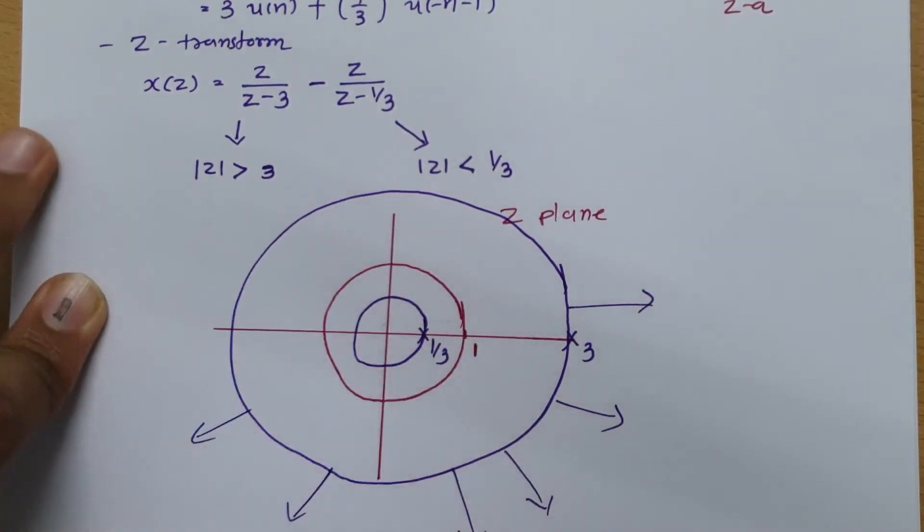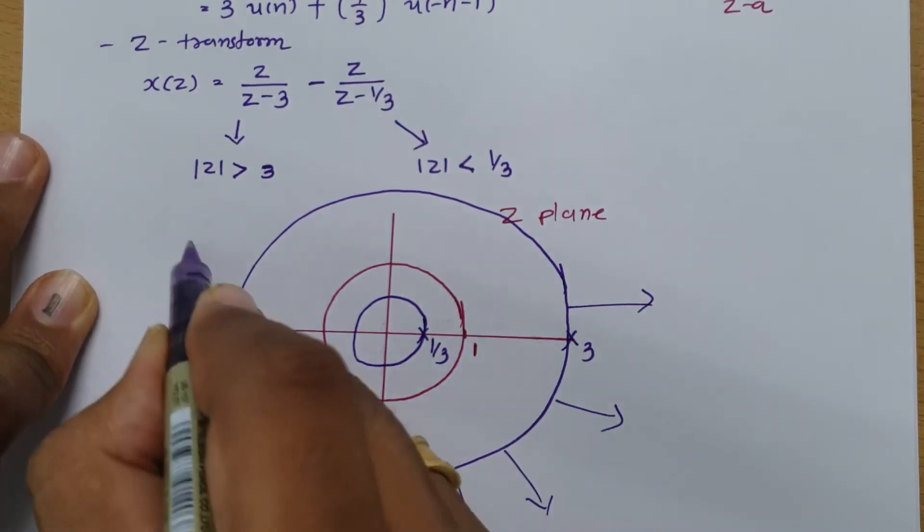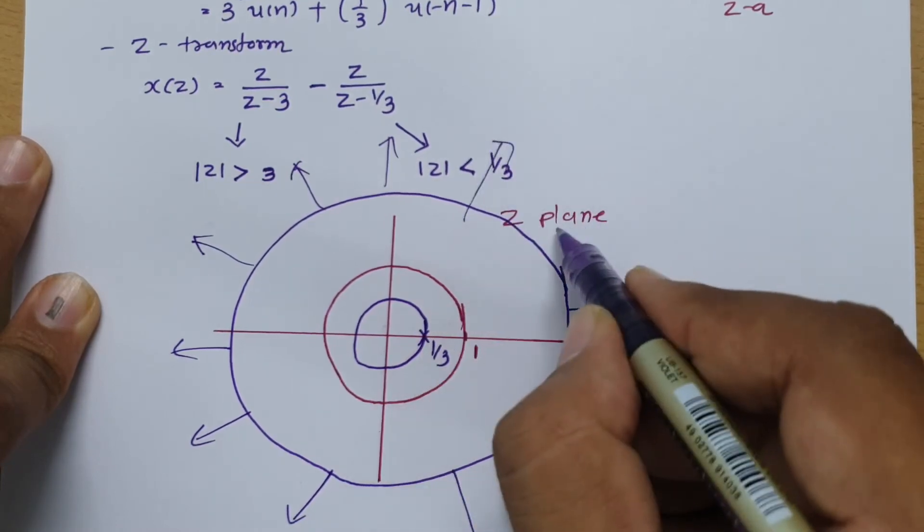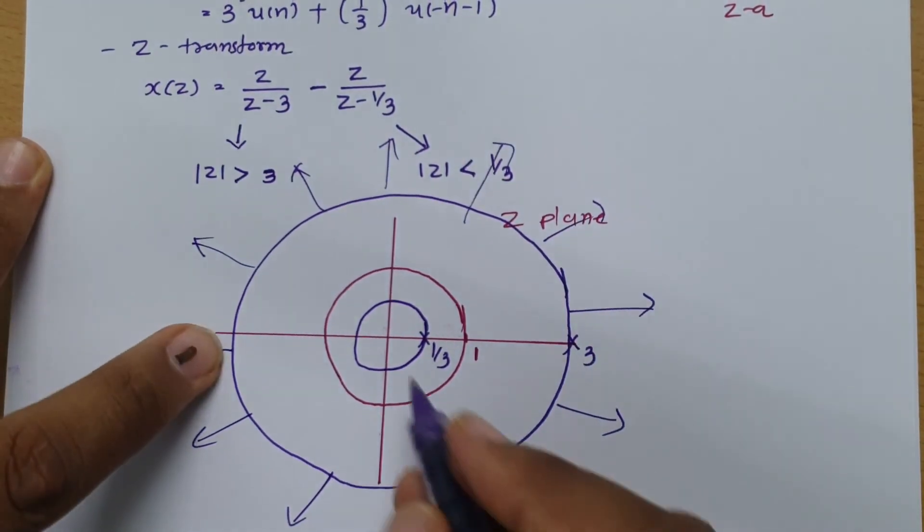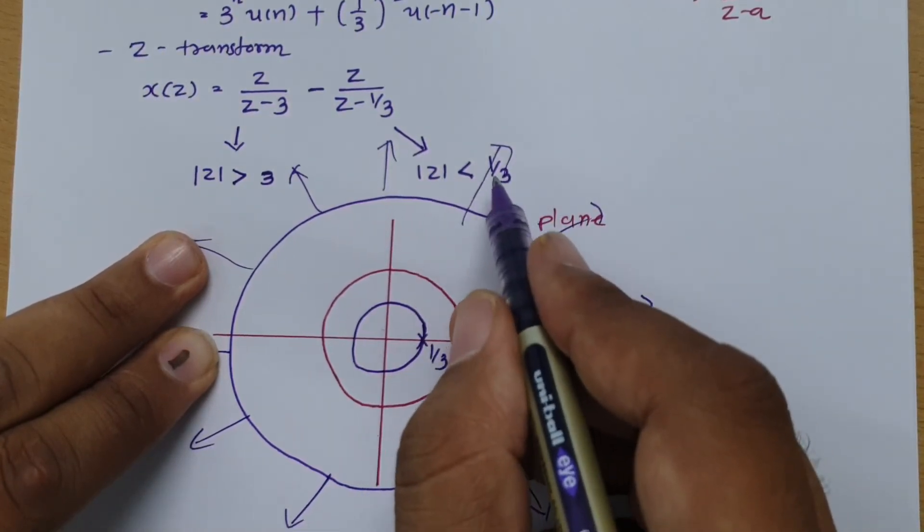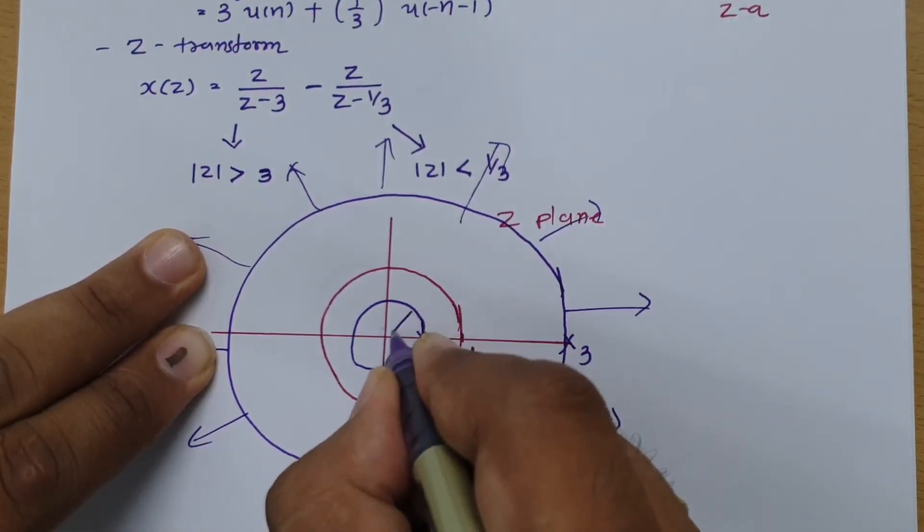Now, at |Z| > 3 there is ROC. So ROC will be exterior to the circle of radius 3. Greater than 3 means exterior direction, and ROC for 1/3 is less than Z, meaning it is going towards the origin.